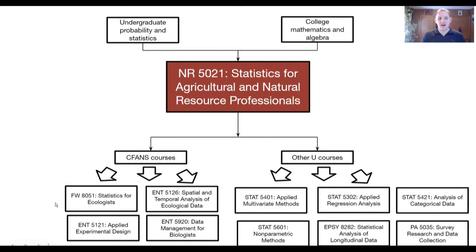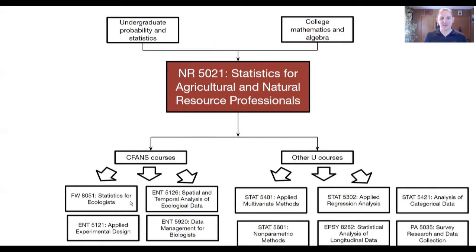I really recommend FW8051 — Stats for Ecologists — if you want a more advanced class in statistics that gets into Bayesian statistics. That's a great course. Unfortunately, it's typically taught in the spring, but it won't be taught in spring of 2022 because the professor, Dr. John Fieberg, is on sabbatical. You'll have to catch that in 2023 if you wanted to take that course.